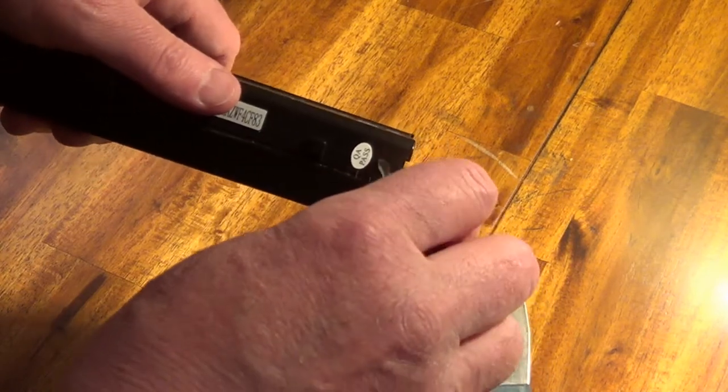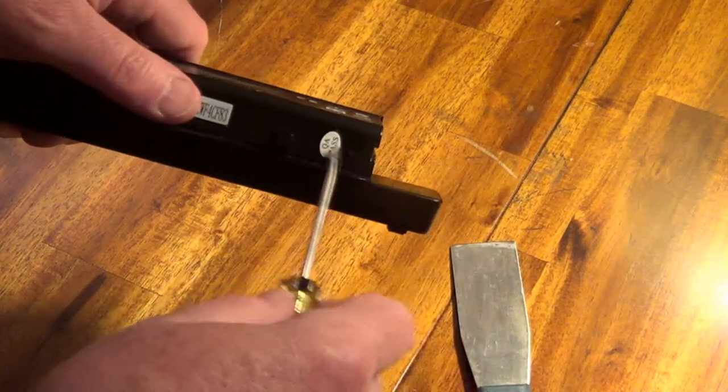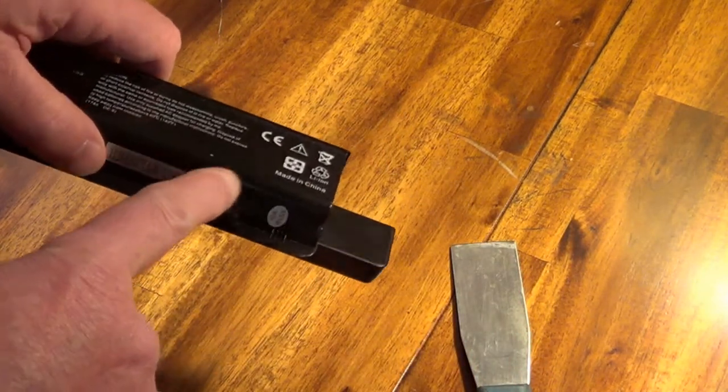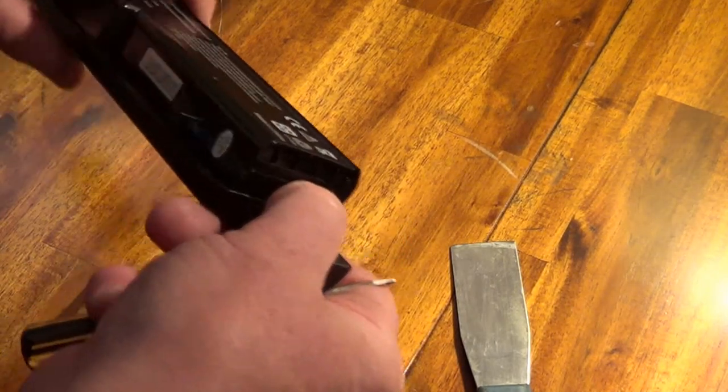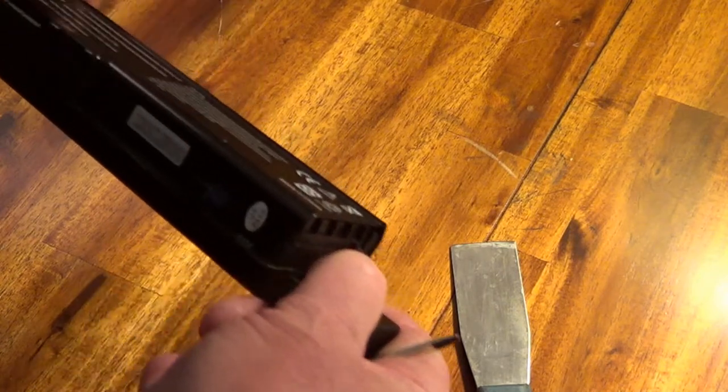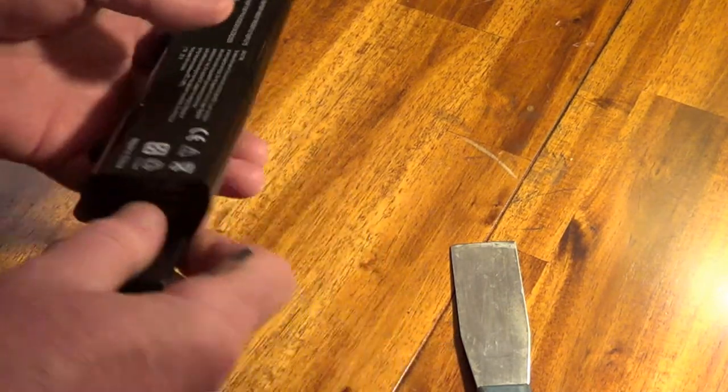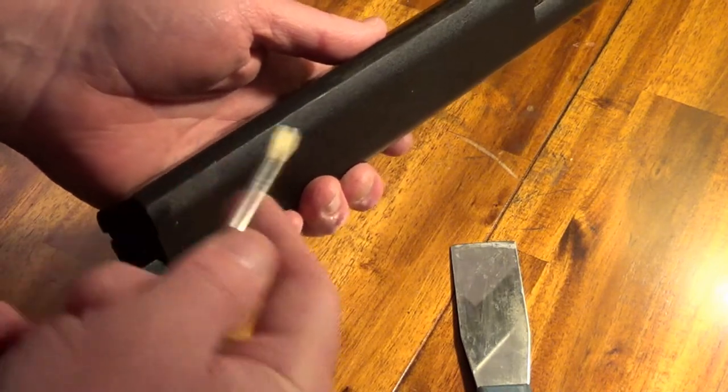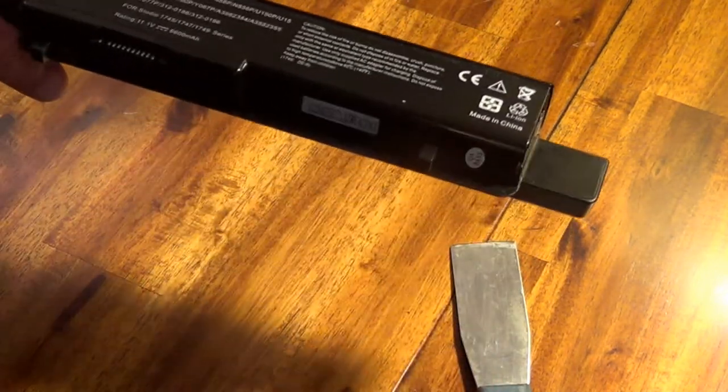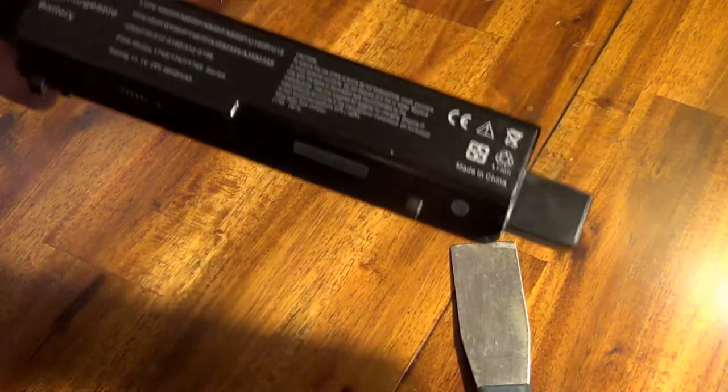It seems natural to pry it open with a screwdriver, but the lithium cells are just right inside there. This plastic is not that thick—it's pretty strong, but it's so tempting to do that. If you puncture it, you've got a rocket taking off.